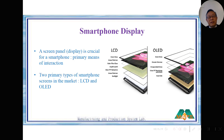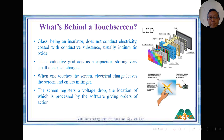Smartphone displays have two groups: LCD and OLED. LCD is still the majority in quantity, so in this study we deal with LCD. For the touch screen, LCD looks like glass but glass itself is not conductive, so it has been coated with a conductive material called indium tin oxide (ITO).